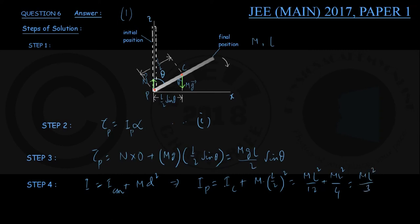I am sure many students remember this formula straight away: M L squared by 3 about one end of the rod.